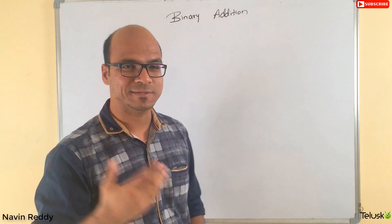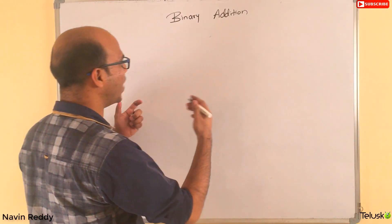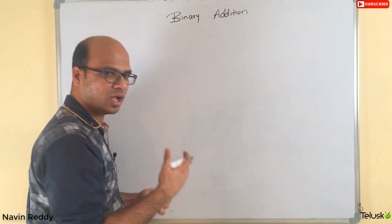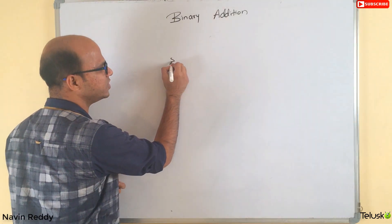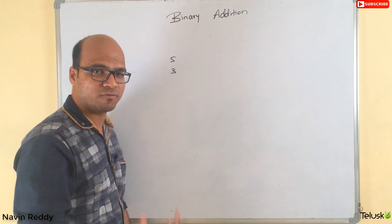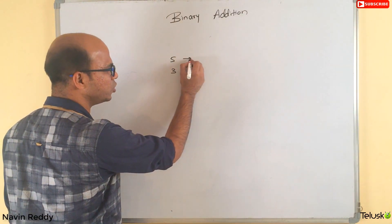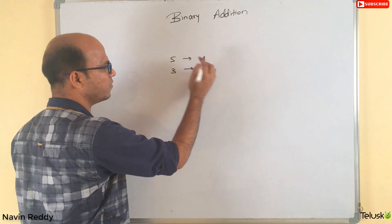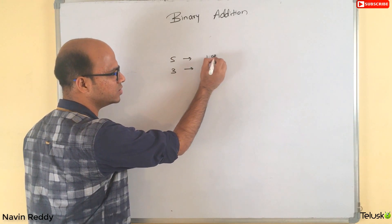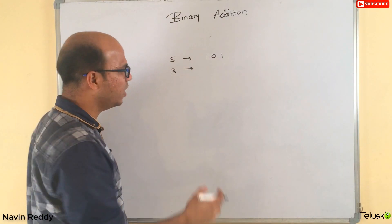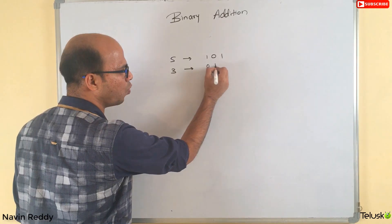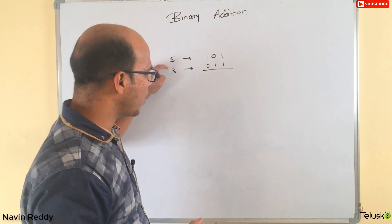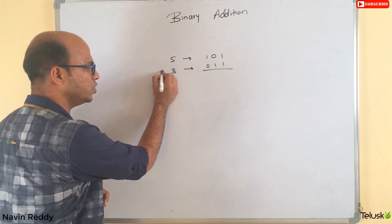One of the operations we normally talk about is binary addition. When you want to add two binary numbers, how do we do that? First we'll take five and three in decimal format and convert them to binary. Five converts to one zero one, and three converts to zero one one. Those are the binary formats of five and three, and we want to add these two numbers.